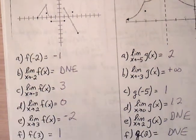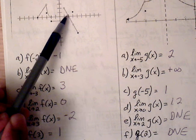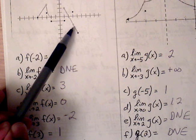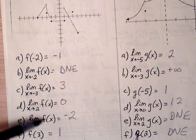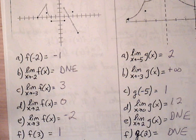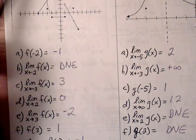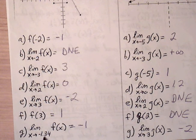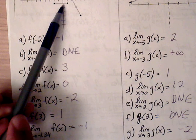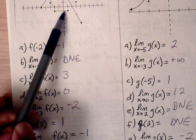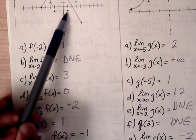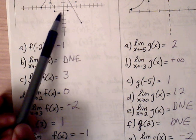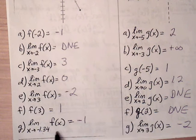For the limit as x approaches 3, the graph connects to the point with a y-value of negative 2. f(3) is simply asking for the ordered pair, which is 1. Finally, for the limit as x approaches negative 1.34, it falls on a horizontal line with a consistent y-value of negative 1, so the limit is simply negative 1.